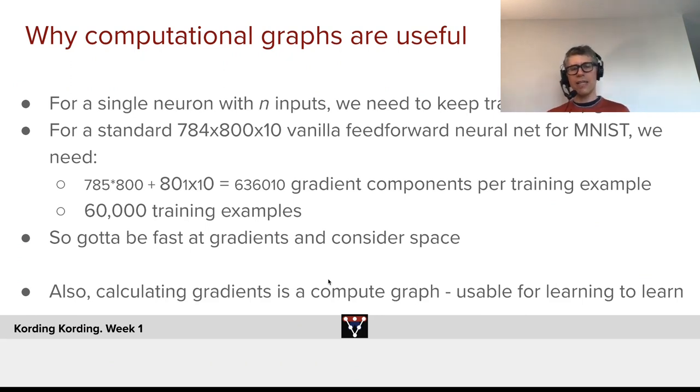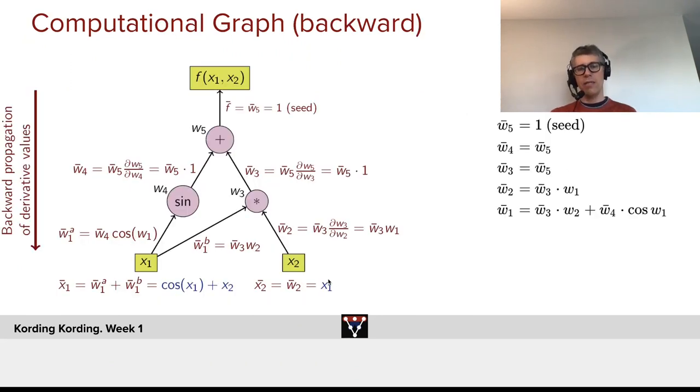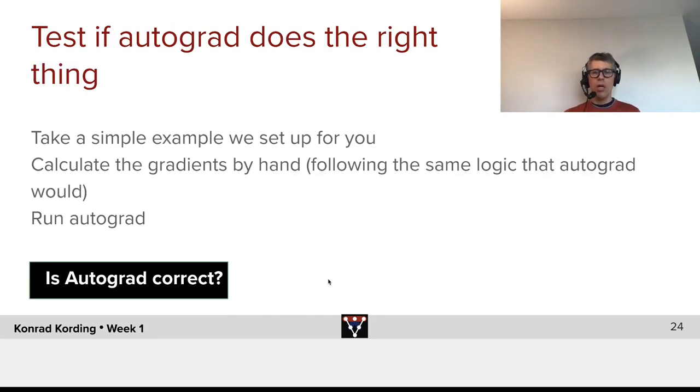Calculating a gradient, I should add, itself can have a compute graph. So we can have systems that learn to learn, but we will talk much, much later about learning to learn. By computing compute graphs while we run functions, we allow computers to do the same step that we did here by hand, to do that automatically. And, of course, much more clever, and using lots of tricks to make it be more efficient. While you run forward calculations in PyTorch, it basically sets up this whole compute graph that allows it to very quickly calculate the gradient. What we'll do is, you'll take a simple example that we set up for you. You will calculate the gradients by hand, going the same way backwards, and then you'll run autograd, and you will see if automatic differentiation gives you the correct results.